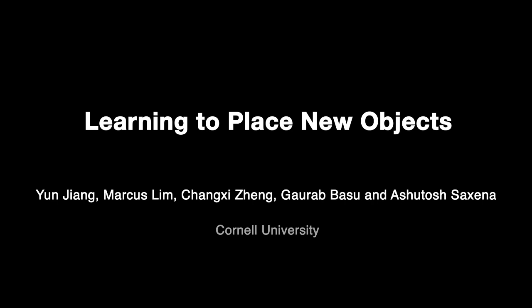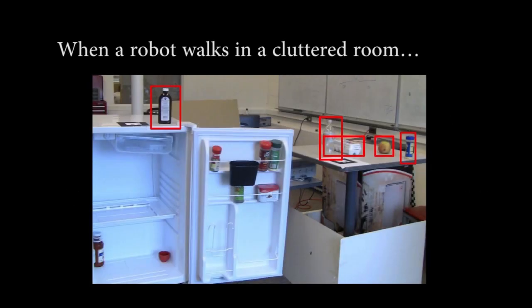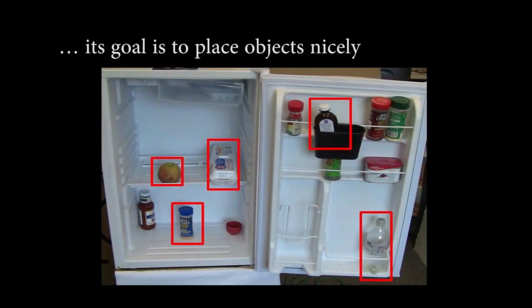In this work, we consider the problem of how to arrange and place objects in a scene. When a robot walks into a disorganized room, its goal is to place these objects stably, as well as in semantically preferred locations.